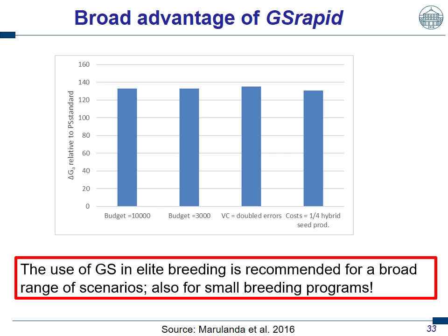That means the use of genomic selection in elite breeding is recommended for a broad range of scenarios and also for small programs. We did this calculation not only for hybrid wheat, but also for hybrid rye, hybrid triticale, and hybrid barley. It appears quite robust that a breeding scheme using one stage of genomic selection to reduce the cycle length by one year of yield phenotyping is really worth taking into account.